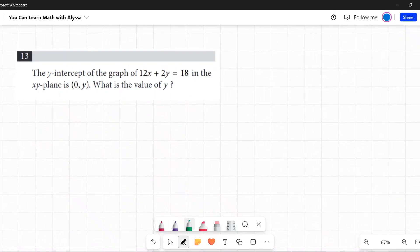The y-intercept of the graph of 12x plus 2y equals 18 in the xy-plane is 0, y. What is the value of y?